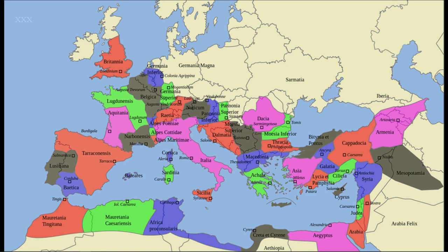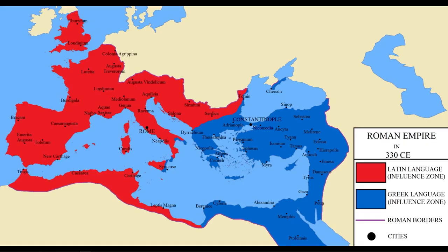Here you can see the main provinces of the Roman Empire in the period just before the one we're about to look at. This map shows us how the empire was more or less divided into two in 330 AD, between the Greek-speaking east and the Latin-speaking west.